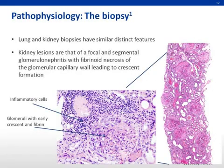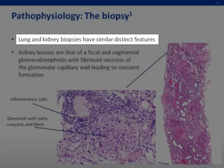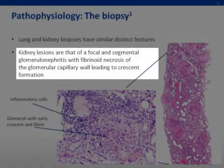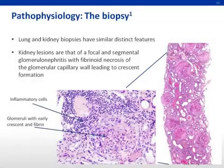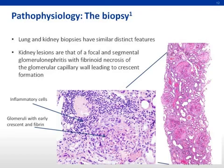Systemic necrotizing vasculitides are severe diseases for which treatment carries significant additional risks of severe complications. Therefore, in all possible cases, a tissue diagnosis is the gold standard and should be obtained in a safe manner without placing the patient at risk from complication. Of interest, lung and kidney biopsies in MPA reveal similar findings and distinguish MPA from GPA. Kidney lesions reveal a focal and segmental glomerulonephritis. Here are two images revealing a large number of dark staining inflammatory cells, along with fibrin deposition and thickening of the renal epithelial cells. The injury to the kidney results in leakage of plasma proteins, or fibrin, causing renal epithelial cells to proliferate and thicken, compressing the glomeruli. In the low power image on the right, the intense staining fibrin can be seen leading to thickened epithelial cells that look like a crescent, hence the name.